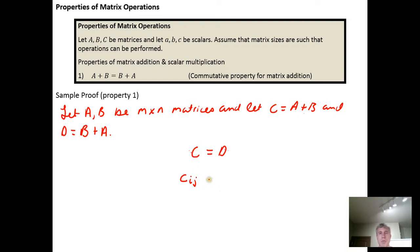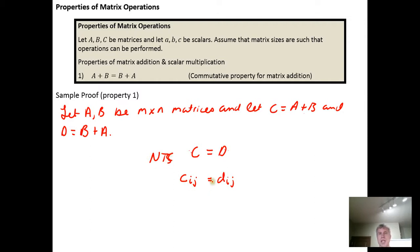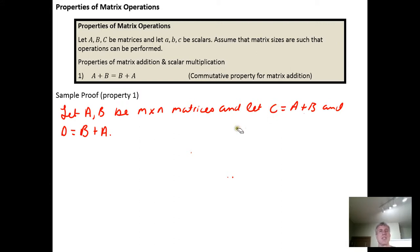What we want to demonstrate is that the c sub i j element is exactly the same as the d sub i j element in matrix D. In other words, if the i-th row j-th element for every element in C matches the i-th row j-th element for every element in D, then the two matrices are the same. So we need to show that c sub i j equals d sub i j for all elements in matrices C and D.